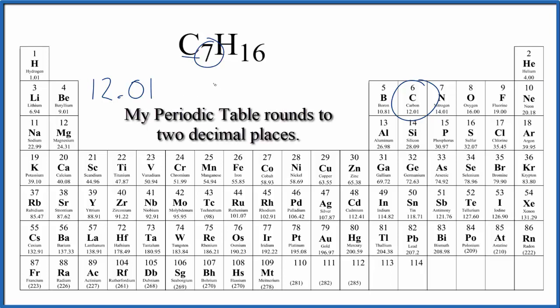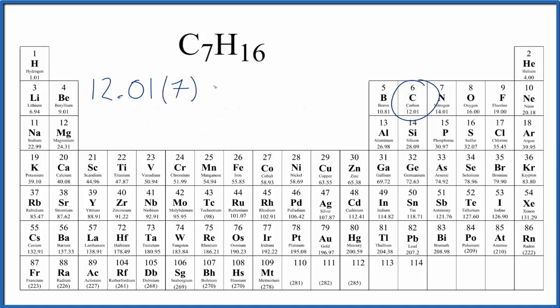We have seven of these carbon atoms, so we're going to multiply this by seven, and then we'll add the hydrogen. Hydrogen 1.01 grams per mole, and we have 16 of those. We'll multiply this by 16.